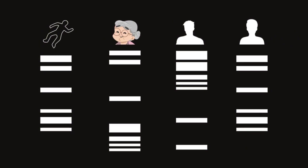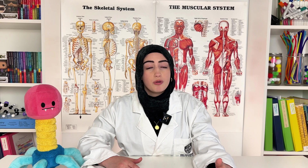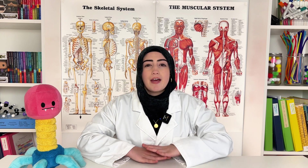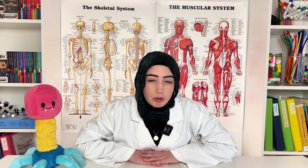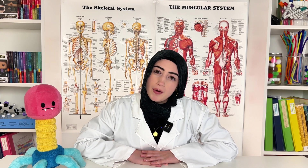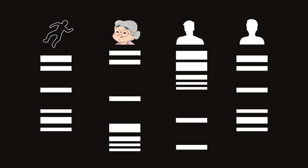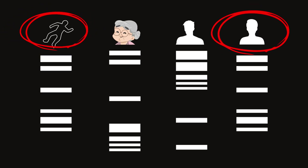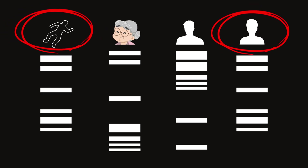Here we can see the length of each fragment based on its distance from the well. The heavier fragments don't move as far, whereas the lighter fragments move further. The main thing we want to look at is whose genetic profile matches the DNA found at the crime scene — and that is suspect two.